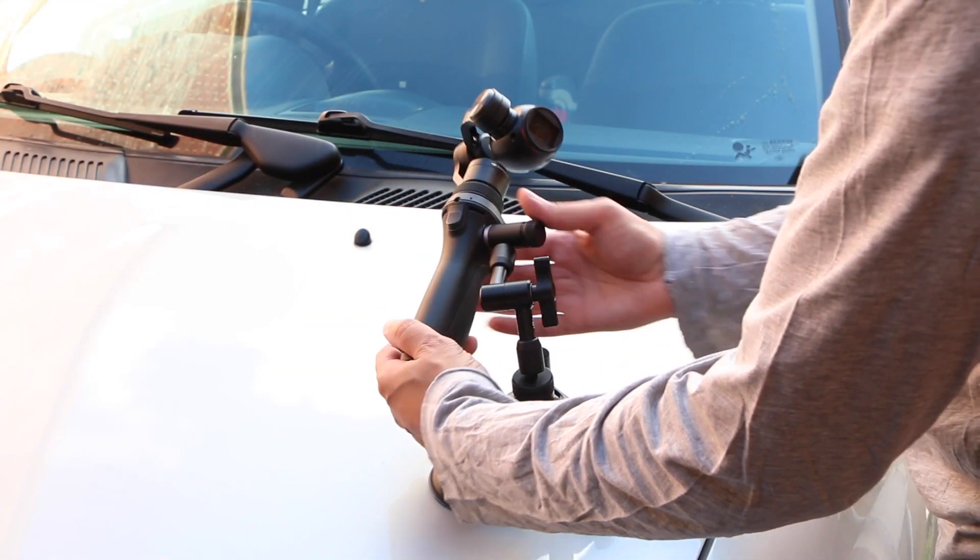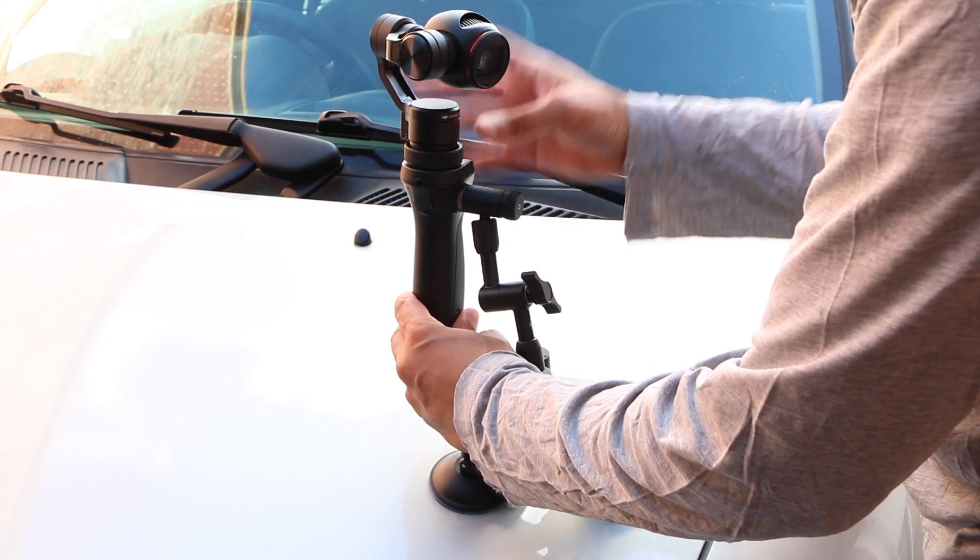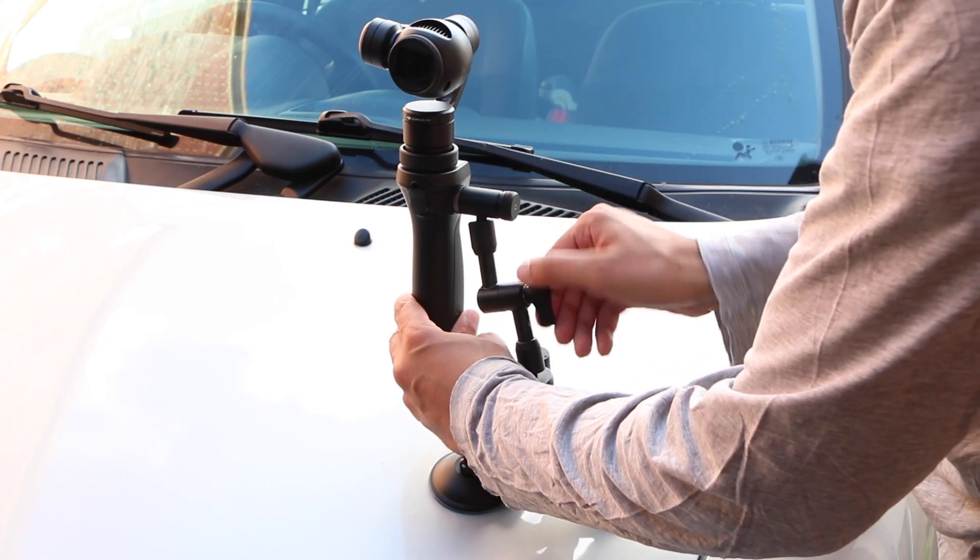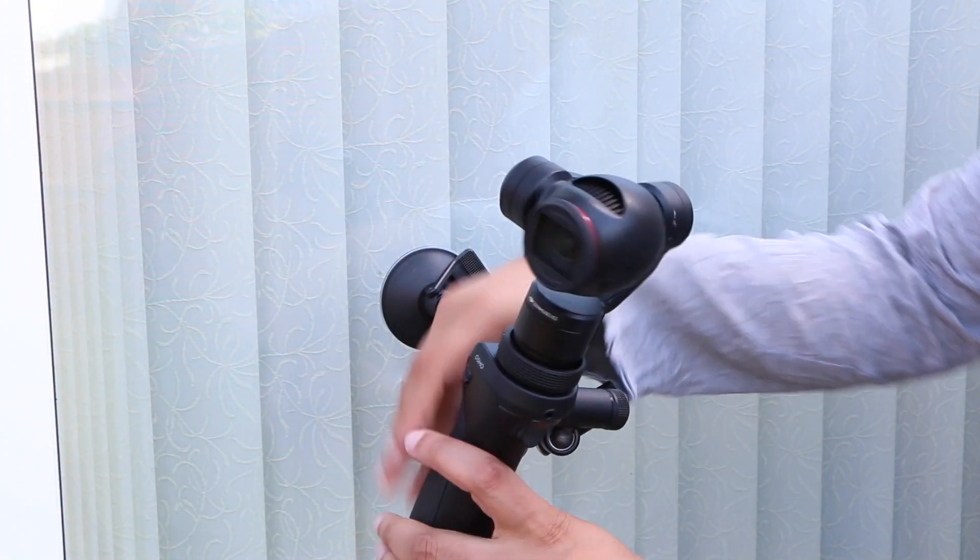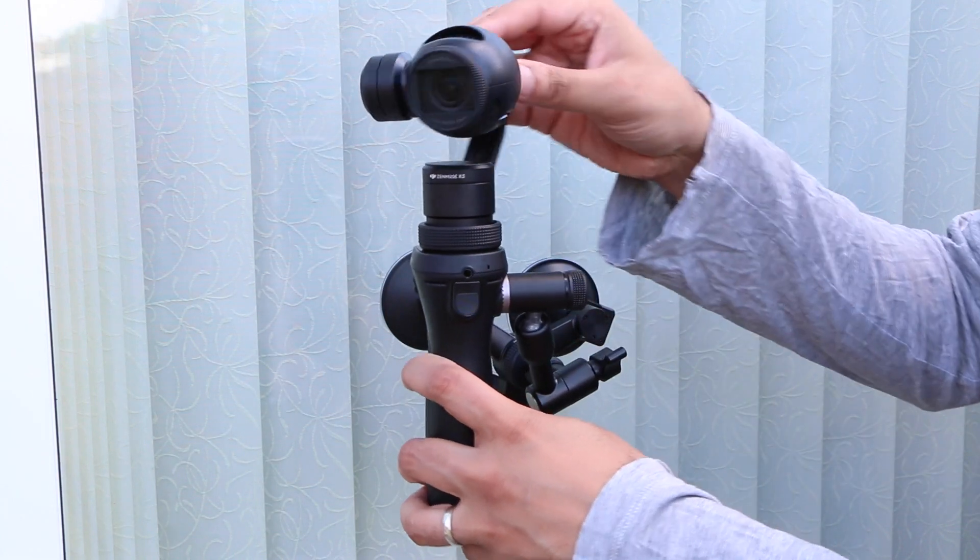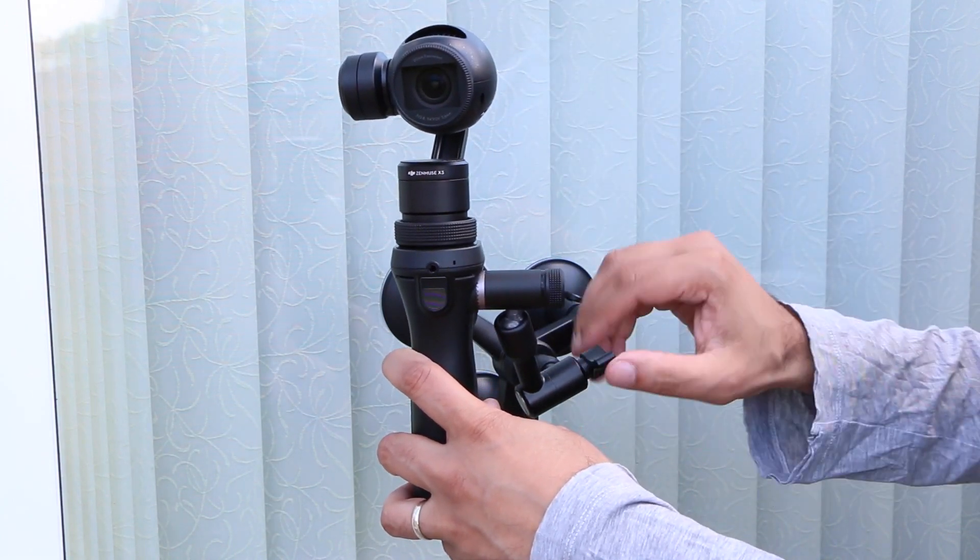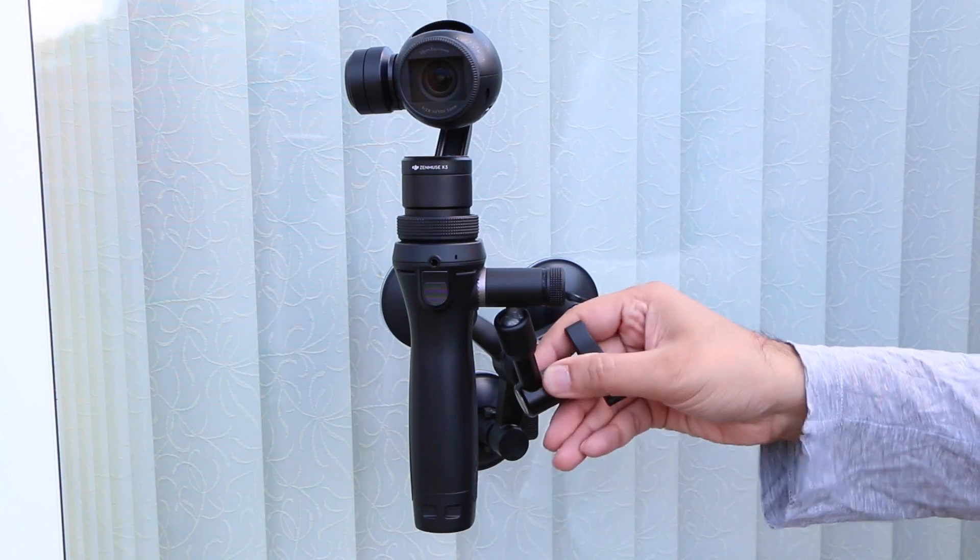We can then proceed to loosen the thumb screw, which in turn releases the adjustable arm, providing the ability to reorientate and direct the Osmo camera where required, with complete ease. After which a single turn locks the entire structure into place.